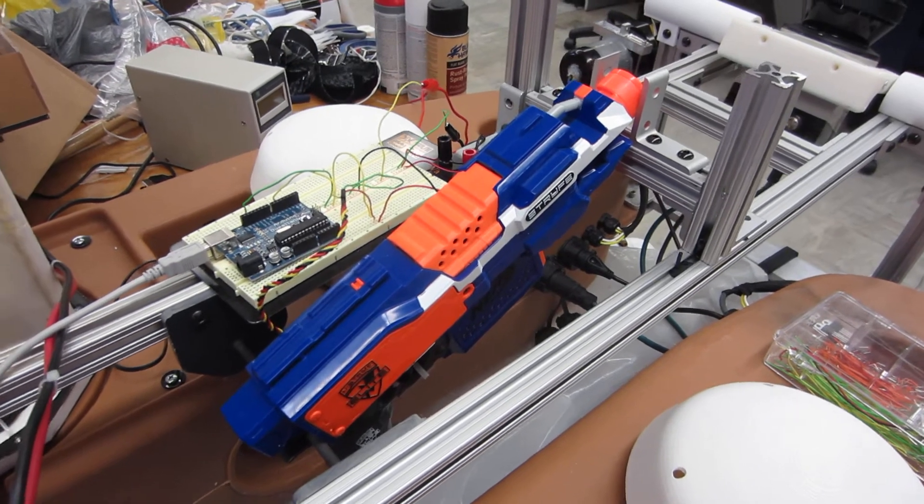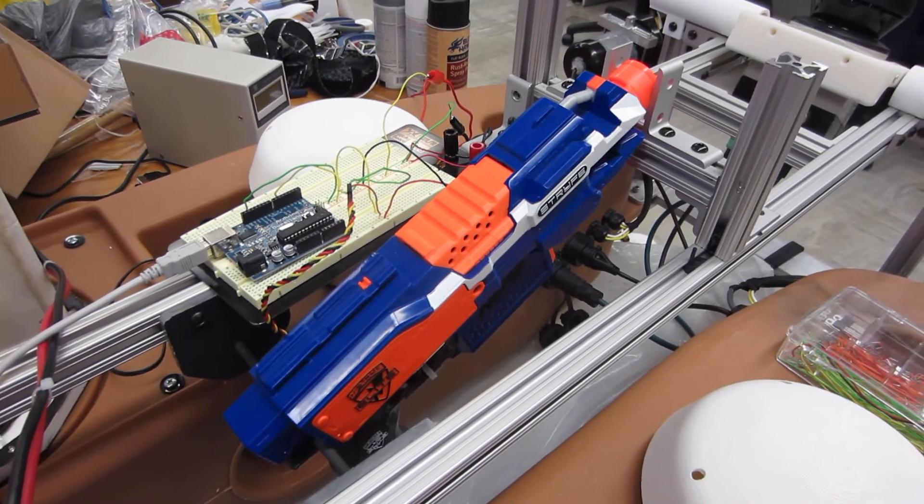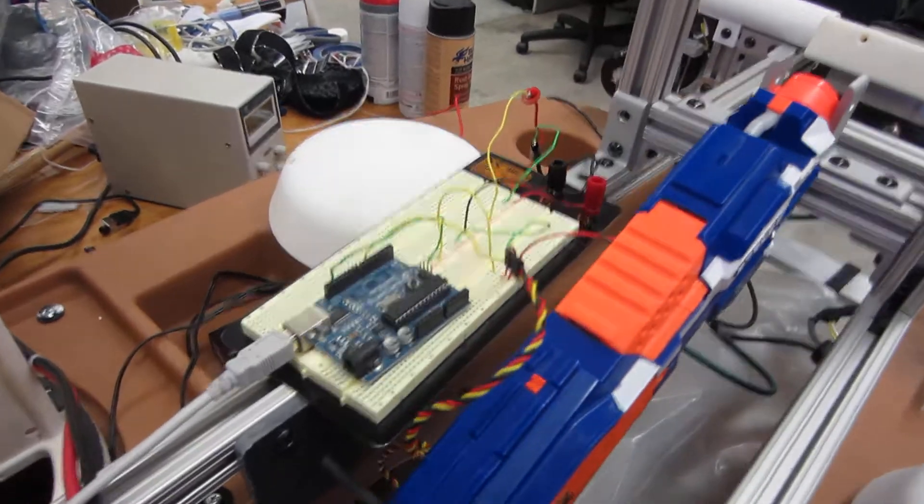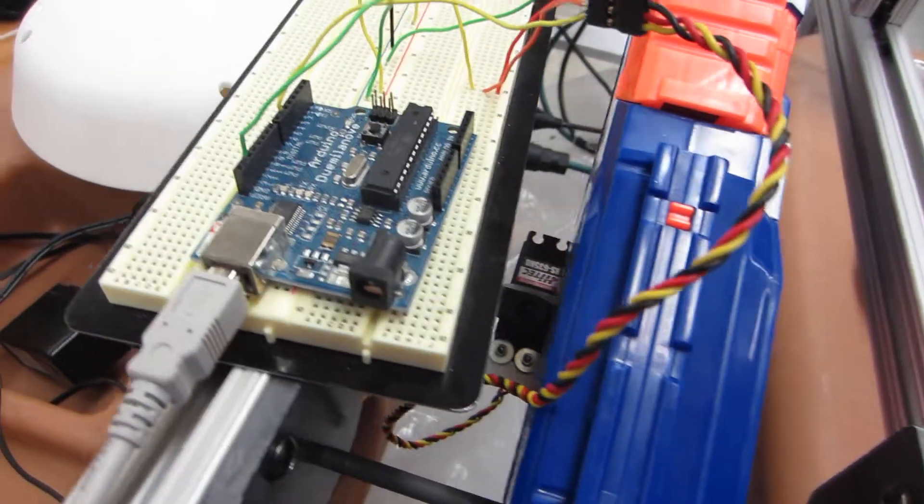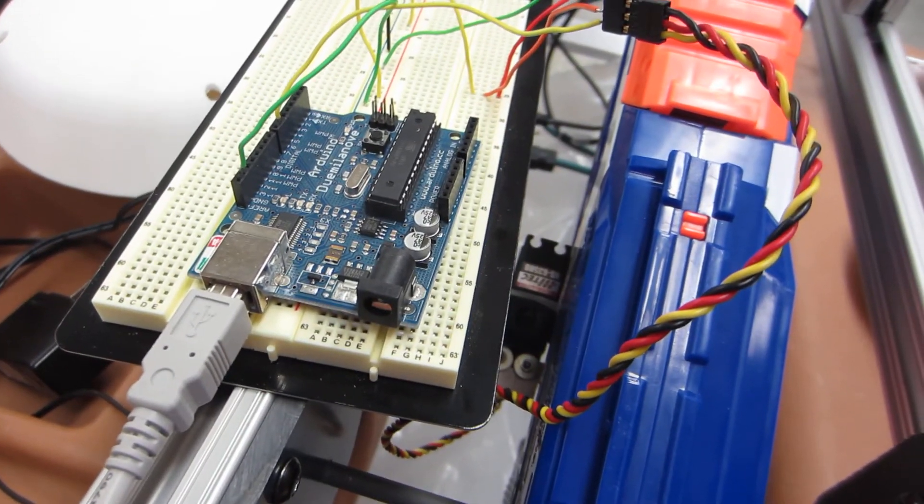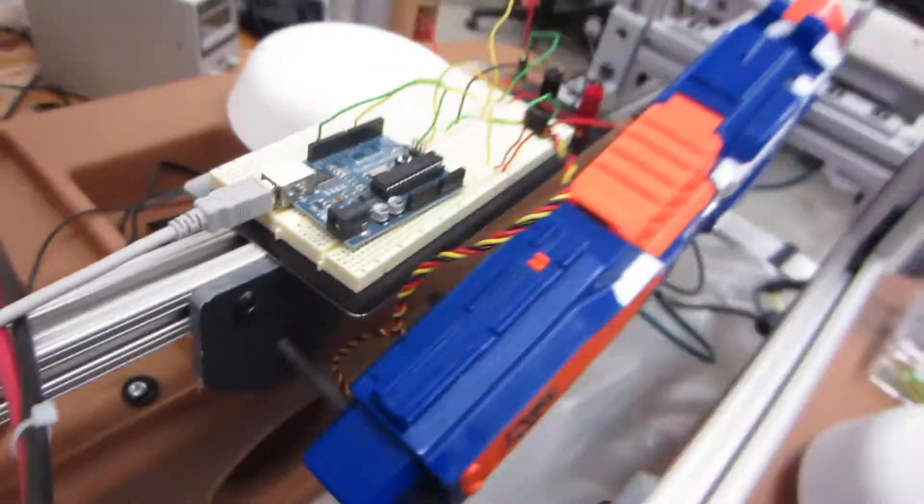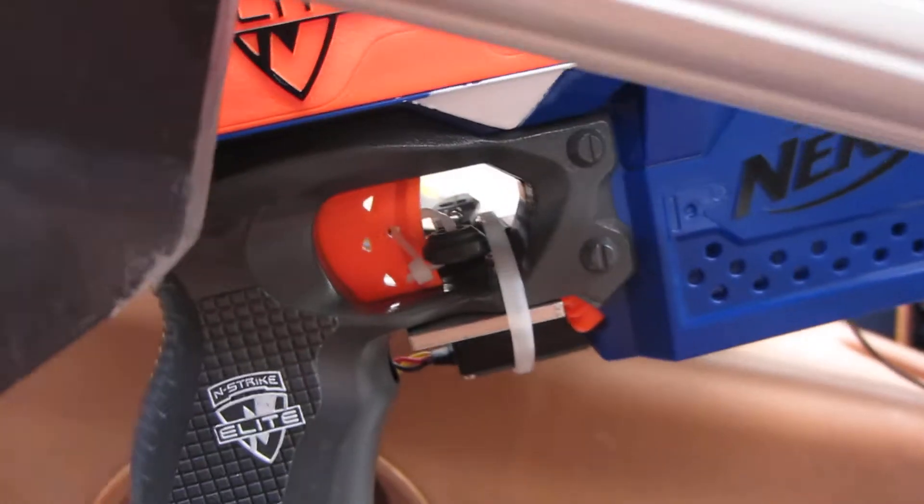You pre-program it, it does its own thing using actuators and sensors. The Dart Launcher itself is controlled by this Arduino board, and that's giving a PWM signal to the little servo motor.